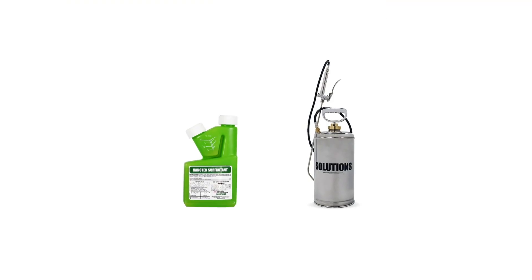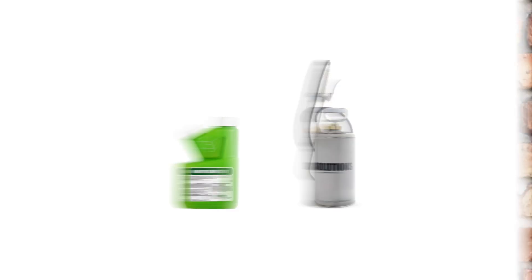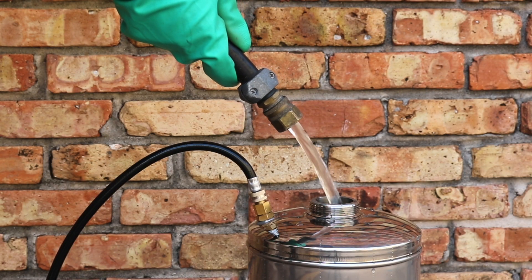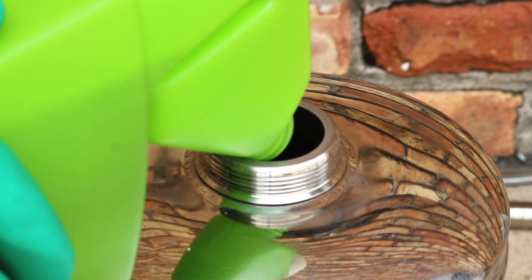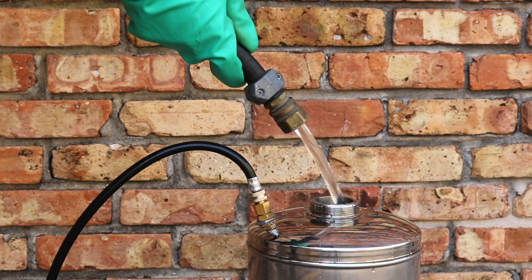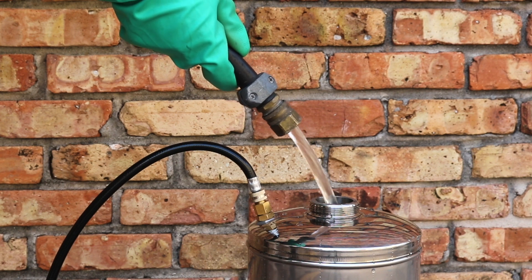Mix your pesticide or fertilizer according to its label directions. Fill your sprayer with water until it reaches about 90% capacity, then add the proper amount of Nanotech Surfactant. Agitate the solution and then fill your sprayer to 100% capacity to create your completed solution.